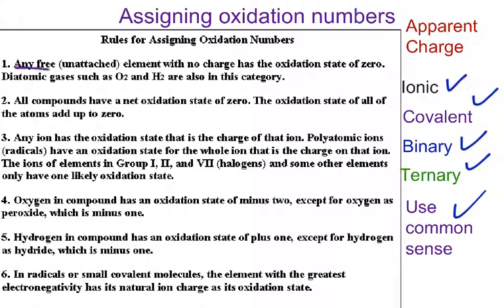Anything that has no actual, any actual unattached or unreacted element has an oxidation number of zero. All compounds, when you add them up, if they're neutral, will add up to zero when you add their oxidation numbers up.